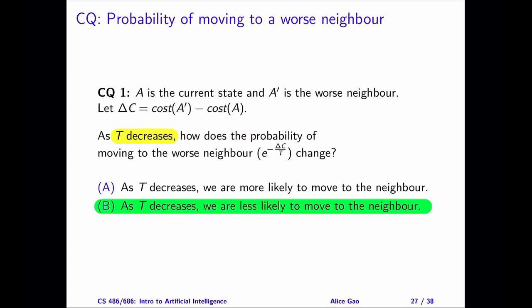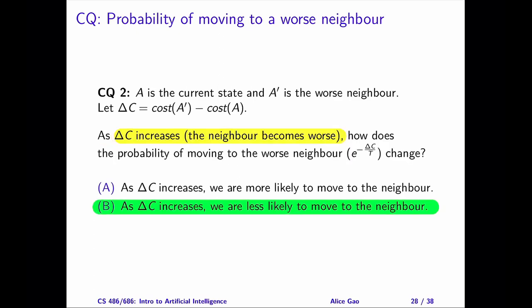The correct answer to question one is B. As the temperature decreases, the probability decreases. The correct answer to question number two is B as well. As delta C increases, the probability decreases. Please watch a separate video for detailed explanations.